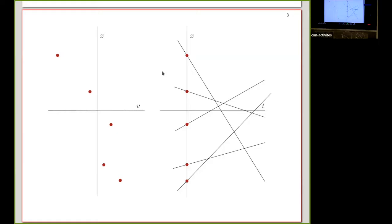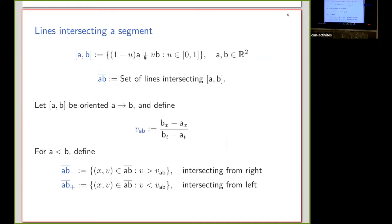This is a representation of lines in R², and then we can consider a segment AB that is a two-dimensional segment. We are now considering the set of lines that cross this segment — this is called AB-bar.